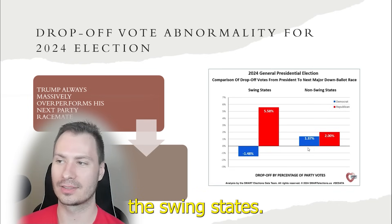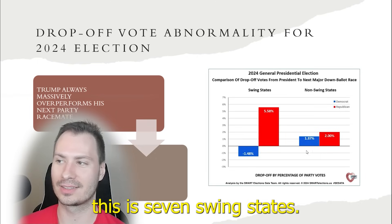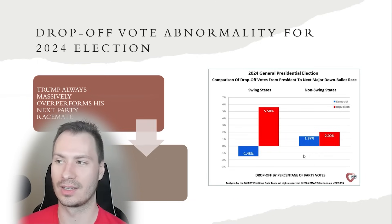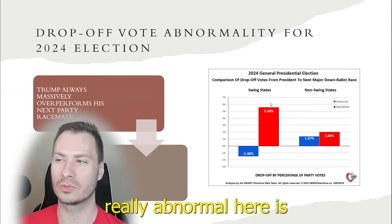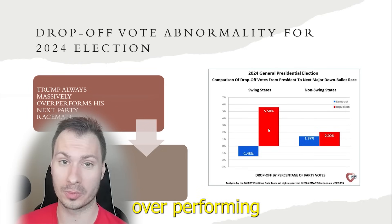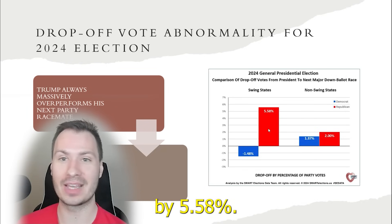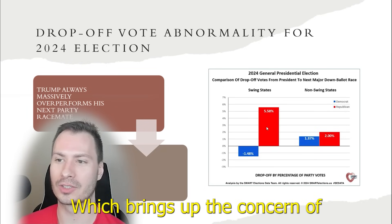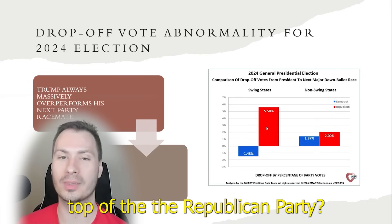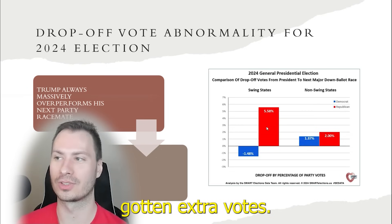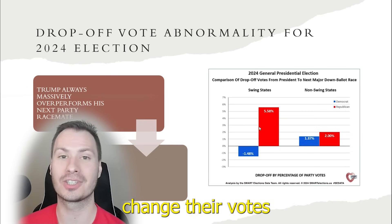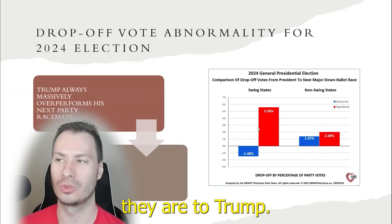When we look outside the swing states — keep in mind, this is seven swing states versus all other 43 states — we see that she has a positive 1.37% and Trump has a positive 2%. What's really abnormal here is Harris is underperforming on average in the swing states, and Trump is significantly overperforming by 5.58%, which brings up the concern of where did he get those votes. Either more Republicans showed up to vote this time around, or people changed their votes from whatever party they are to Trump.